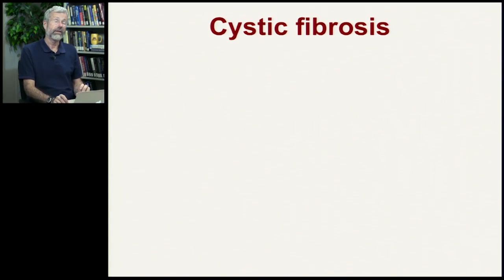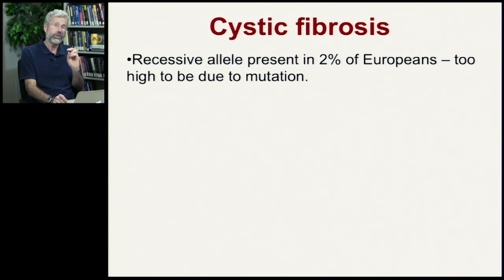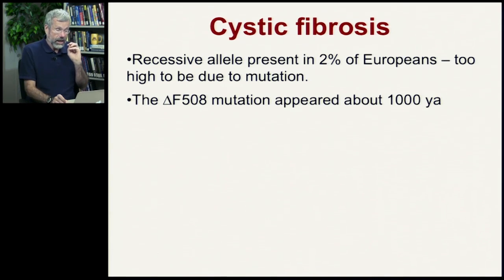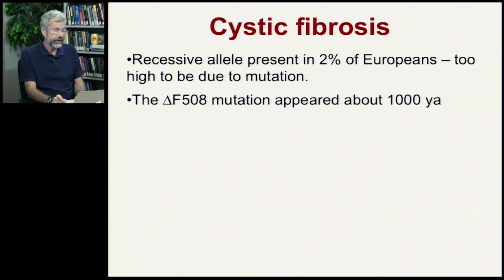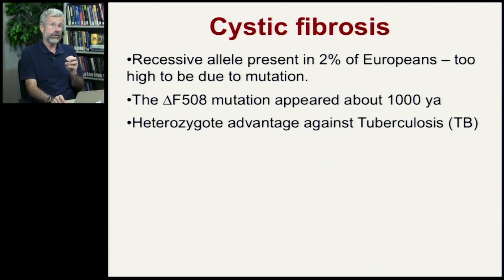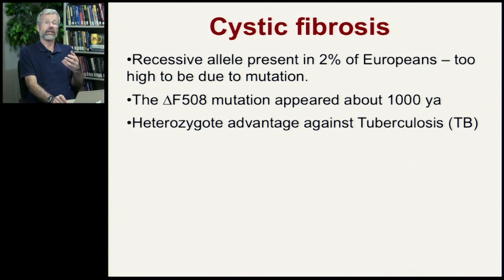Now let's go back to cystic fibrosis — a tragic inherited disease that is a lethal recessive. The recessive allele is present in about 2% of Europeans, and according to population genetics modeling, 2% is actually too high to be due just to mutation. The allele that causes cystic fibrosis is a very characteristic mutation called delta F508, which appeared within the European population about a thousand years ago. It seems to confer an advantage against infection by tuberculosis through heterozygote advantage — any individual with just one copy of this delta F mutation is less likely to get sick from tuberculosis.